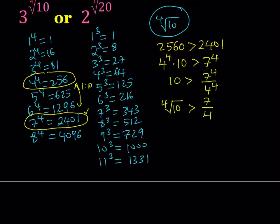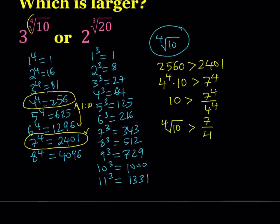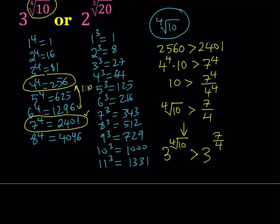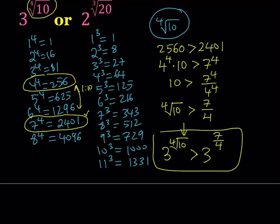That's one of the inequalities we're going to use. We have that number in the exponent — it's 3 to the power something. So I want to write 3 to the power 4th root of 10, and since the 4th root of 10 is greater than 7/4, raising 3 to the power of both sides gives us: 3 to the power 4th root of 10 is greater than 3 to the power 7/4. That was my first goal — writing this exponential with a fractional exponent.